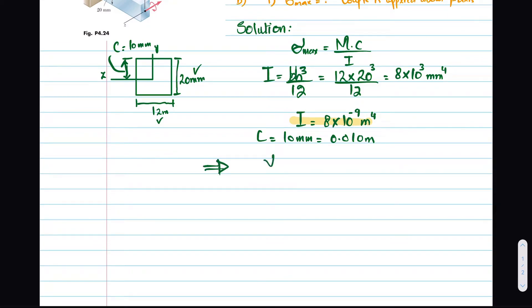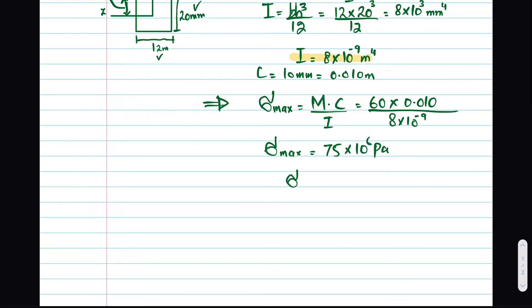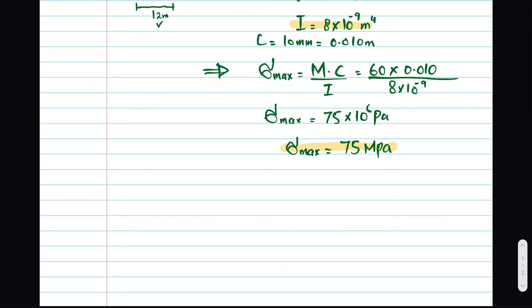We can now find the maximum stress: sigma_max = M × c / I = 60 × 0.010 / (8 × 10⁻⁹) = 75 × 10⁶ Pa, so the maximum stress is 75 MPa.